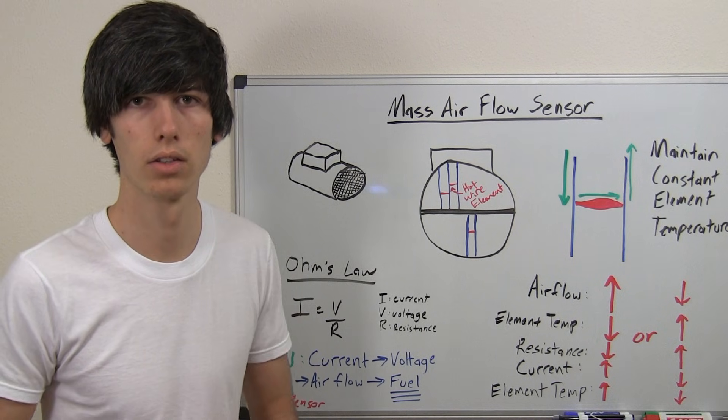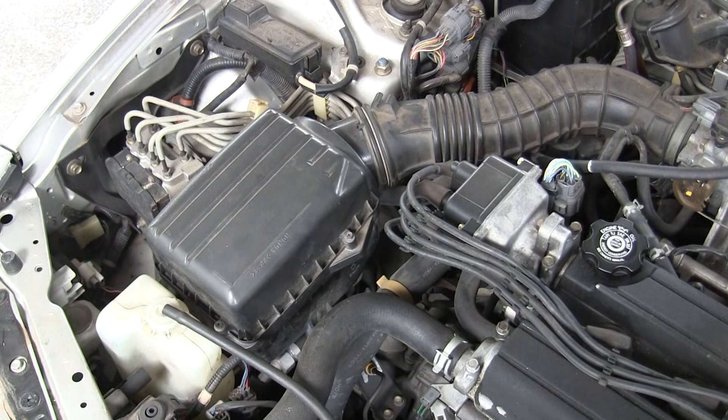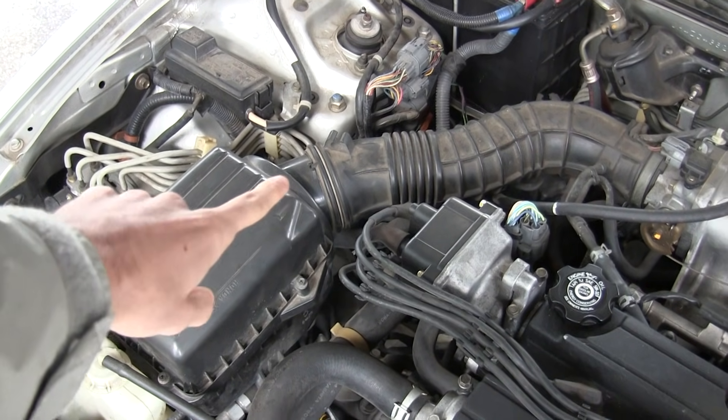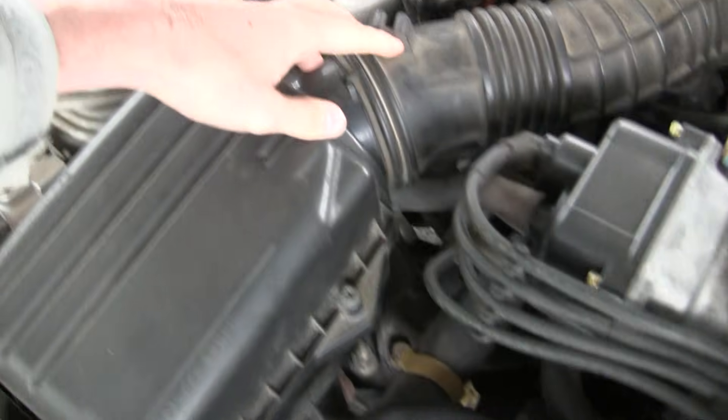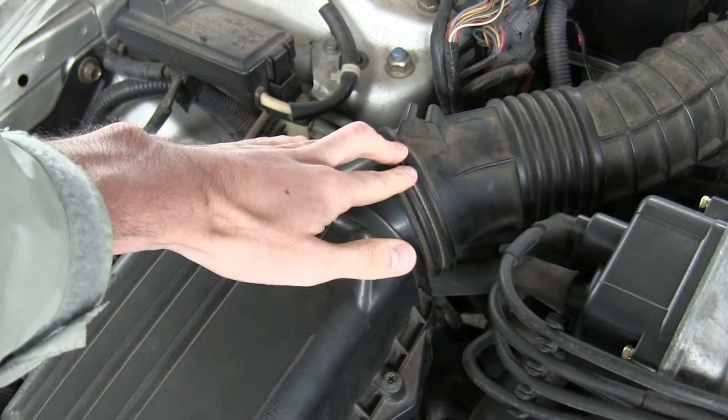Let's take a look at my car real quick and see where this would be located. If my car were to have a mass airflow sensor, it would be located directly behind the air box, so there would be an attachment right here measuring the air coming in.